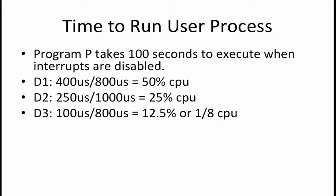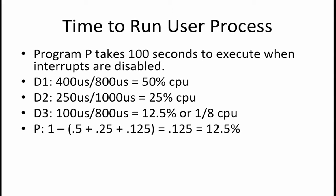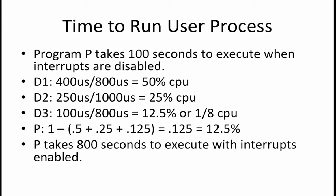D3 uses 100 over 800, or 12.5% of the CPU time. This means that the user programs have the remaining CPU time available to them. The remaining CPU time is 12.5%, or one-eighth of the CPU time. If the user program can only run for one-eighth of the time, that means that a program that takes 100 seconds without interrupts will take 800 seconds to run with interrupts enabled.